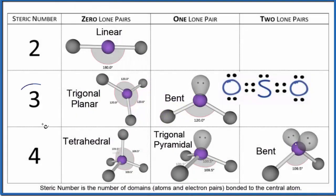When we have three things, a steric number of three attached to our central atom, and one of them is a lone pair, that's going to be a bent molecular geometry.